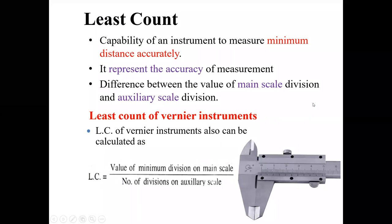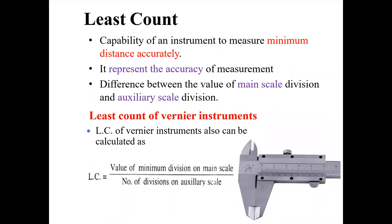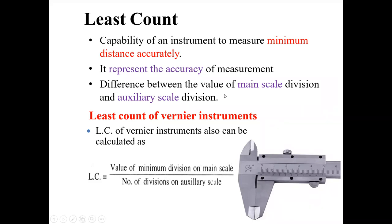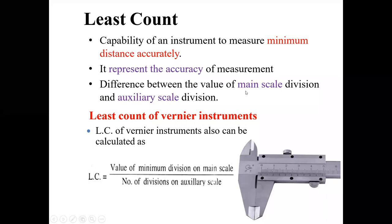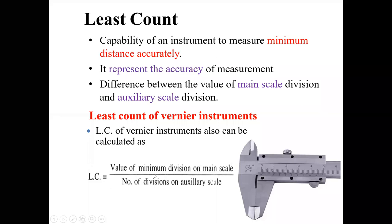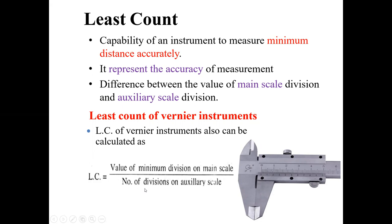Least count is very important for vernier calipers and micrometers. The least count is the capability of an instrument to measure minimum distance accurately — it represents the accuracy of measurement. It is the difference between main scale division and auxiliary scale division. Alternatively, it equals the value of minimum division on main scale divided by number of divisions on the auxiliary scale. You can use either principle to find the least count of the vernier.